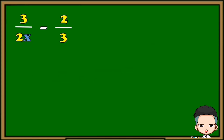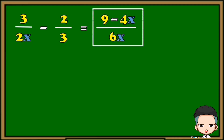Another example: 3 over 2x minus 2 over 3. In this example, the denominators are different, so we're going to multiply the denominators. 2x times 3 is 6x. Then we're going to multiply the numerator of the first term and the denominator of the second term. 3 times 3 is 9. Then copy the operation and multiply the denominator of the first term and the numerator of the second term. 2x times 2 is 4x. Our final answer: 9 minus 4x all over 6x.